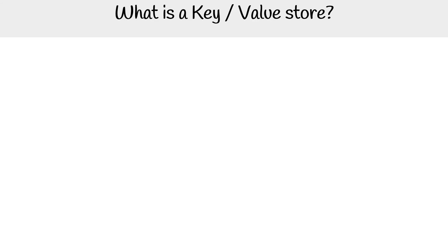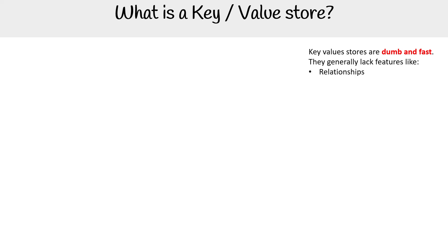Let's take a look at what a key value store is. A key value store is a data store that is really dumb, but it's super, super fast. They'll lack features that you would normally see in relational databases, like relationships, indexes, aggregation, transactions, all sorts of things. But there is a trade off for that speed.